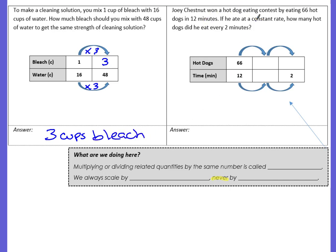Joey Chestnut won a hot dog eating contest by eating 66 hot dogs in 12 minutes. Oh my. If he ate at a constant rate, that means keeping it proportional, then how many hot dogs did he eat every 2 minutes? So here's our ratio table. We have our labels. We're comparing hot dogs to time in minutes. We're given the beginning ratio of 66 hot dogs in 12 minutes. So there's the 66 to 12. And what we're doing is we're changing the minutes to a 2. So we need to find out how many hot dogs.